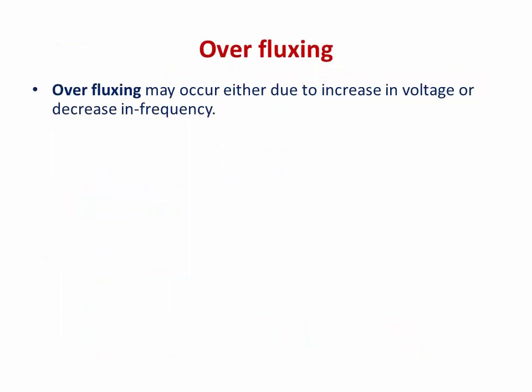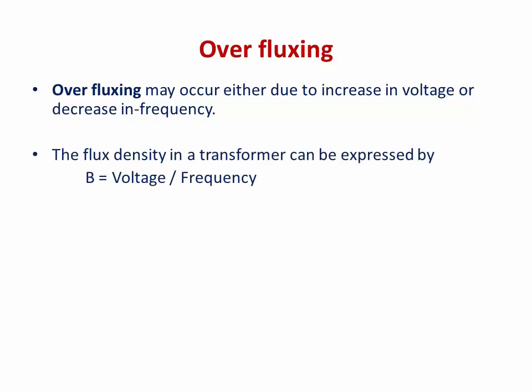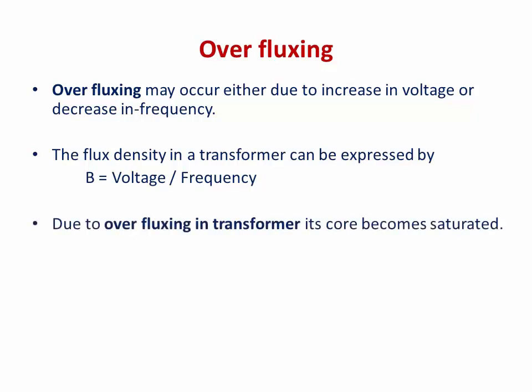Let us discuss what over-fluxing is. It may occur in a transformer due to an increase in voltage or a decrease in frequency. The flux density in a transformer can be expressed as V/f — that is, voltage divided by frequency. Due to over-fluxing, the core becomes saturated. However, you can still use a 60 Hz transformer on a 50 Hz supply by making a few adjustments to the transformer rating.